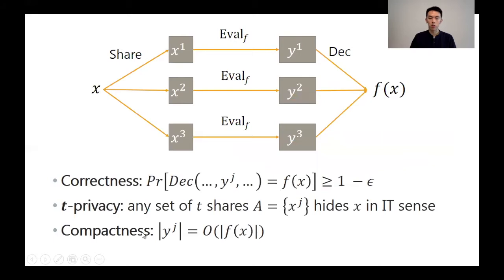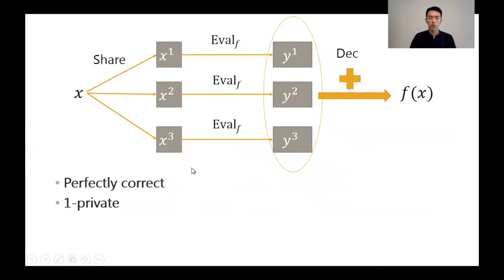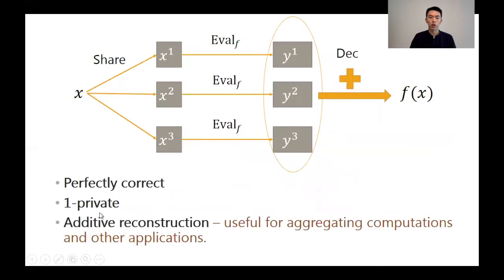As in the case of computational homomorphic encryption, we require the output share to be compact — the size of the output share should be small. This is needed to avoid trivial constructions where the server simply appends a representation of f to the share and postpones all the computation to the decoding step. In our talk, let's focus on perfectly correct and one-private protocols. We also require the protocol to have additive reconstruction where the decoding is a simple addition, which is an extreme form of compactness.